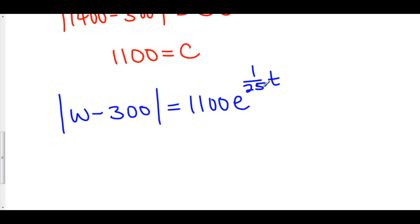e to the stuff is always going to be positive. Always. If you plug in a negative number, that's 1 over e to the stuff. If you plug in 0, that's 1. If you plug in a positive number, that's e to the stuff. It's always going to be positive.